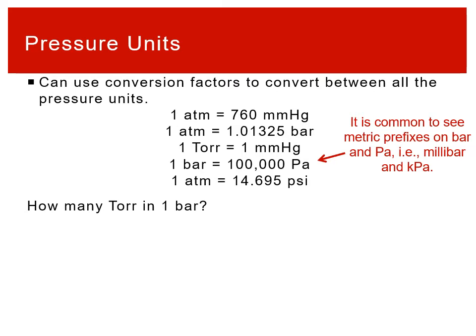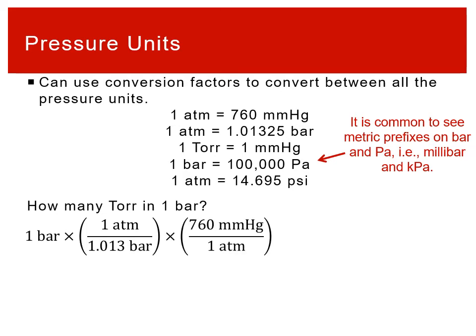There are, of course, conversion factors between all these different pressure units. You don't need to memorize any of these, but you do need to know how to use them — going back to unit conversions from the beginning of the semester. Metric prefixes apply to bar and pascal: millibar and kilopascals are really common. For example, how many torr in one bar? You can convert one bar into atmospheres, atmospheres into millimeters of mercury, and millimeters of mercury into torr — so one bar is 750 torr.